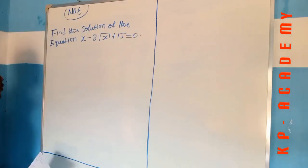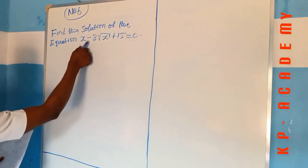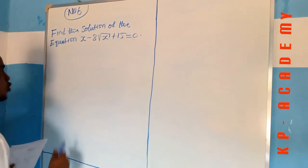All right, you are welcome back. So in this question, find the solution of the equation x minus 8 square root of x plus 15 equal to 0.